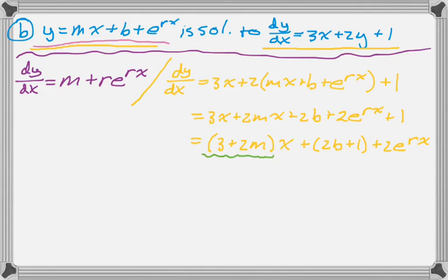So for this form of dy dx, I can see that the coefficient of x is 3 plus 2m. And for the other form, there is no x, so the coefficient must be 0. So that gives me one equation that I can work with. So 3 plus 2m equals 0. Now I know what m is.